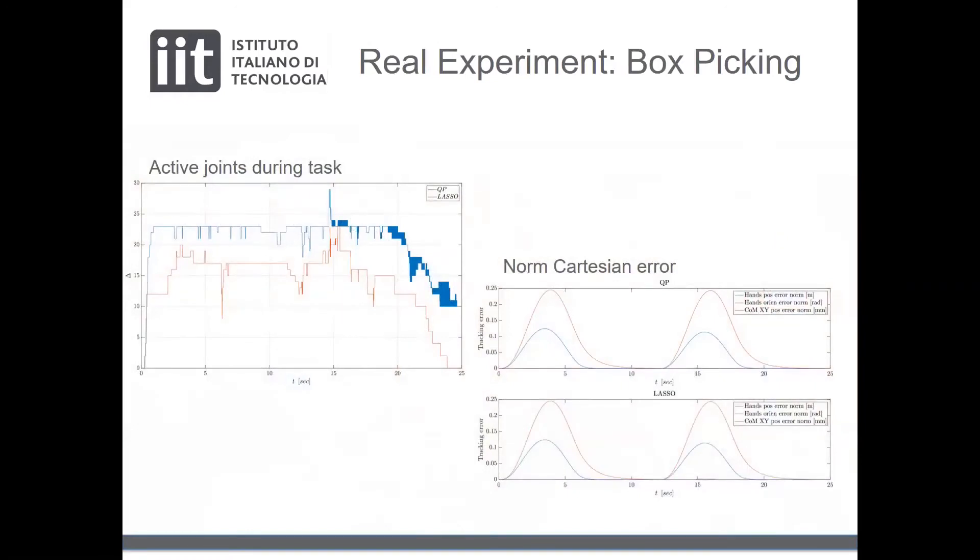The left plot shows the activated joints during the box picking task. In blue, the activated joints from the L2 norm. In red, the activated joints in the LASSO IK, resulting in a less number of activated joints as expected. The plot on the right shows the norm of the Cartesian error, which does not change using the two methodologies.